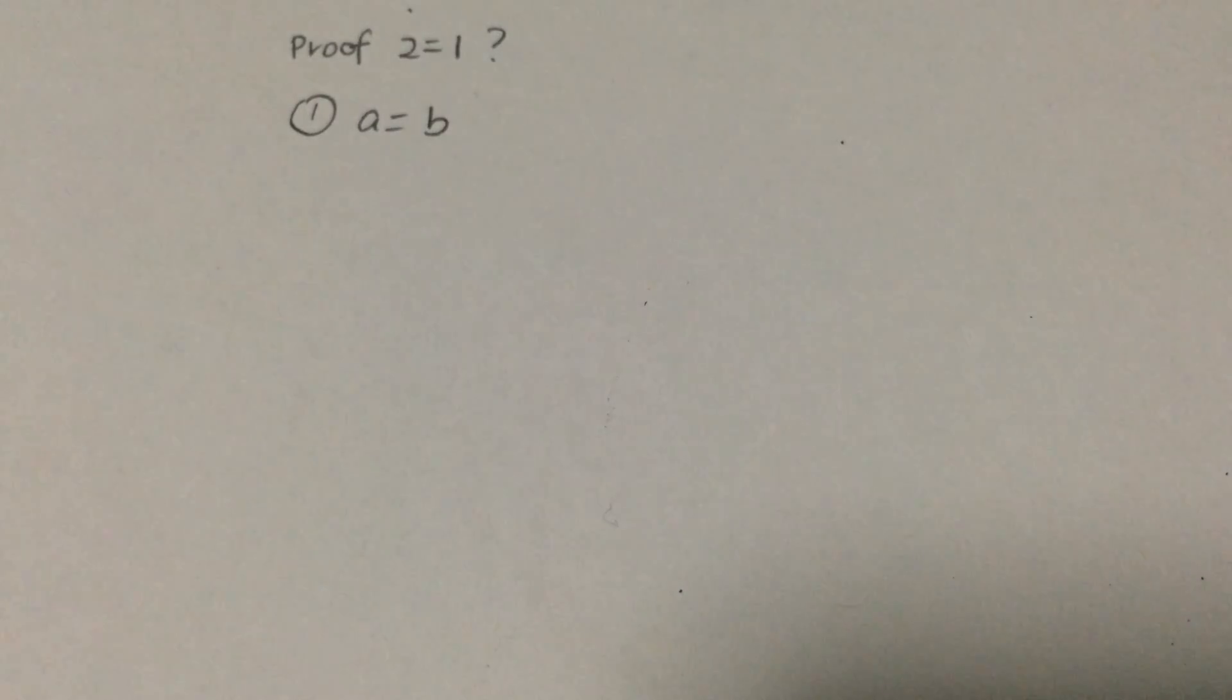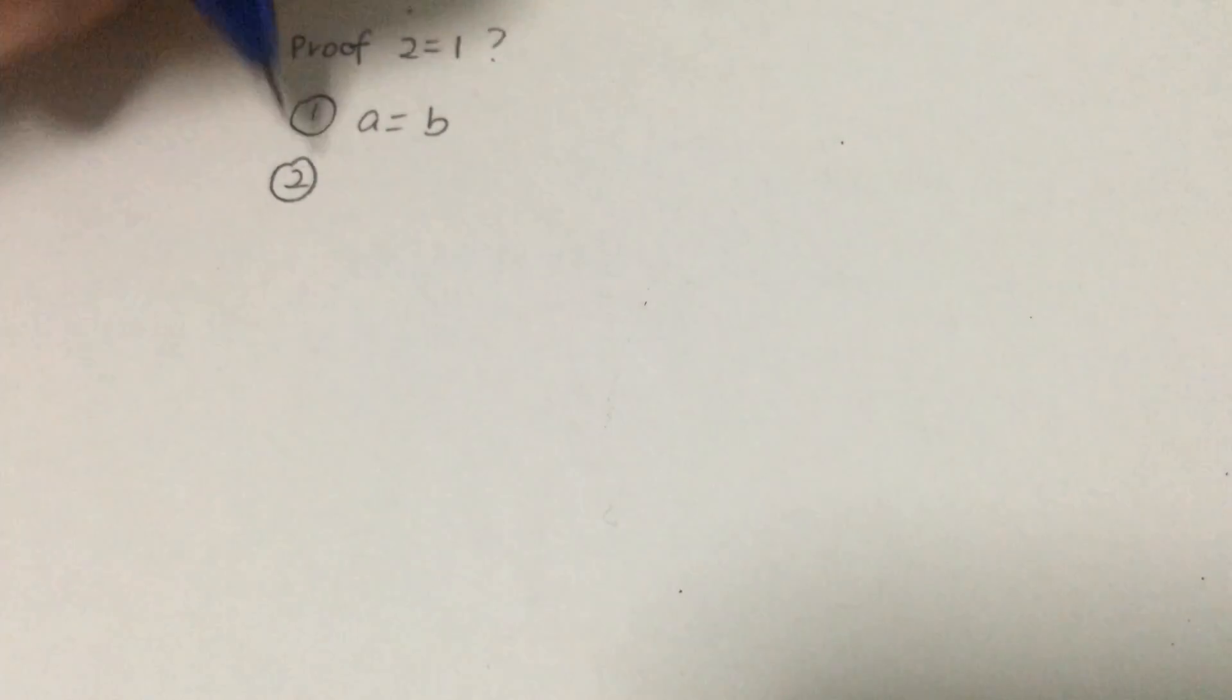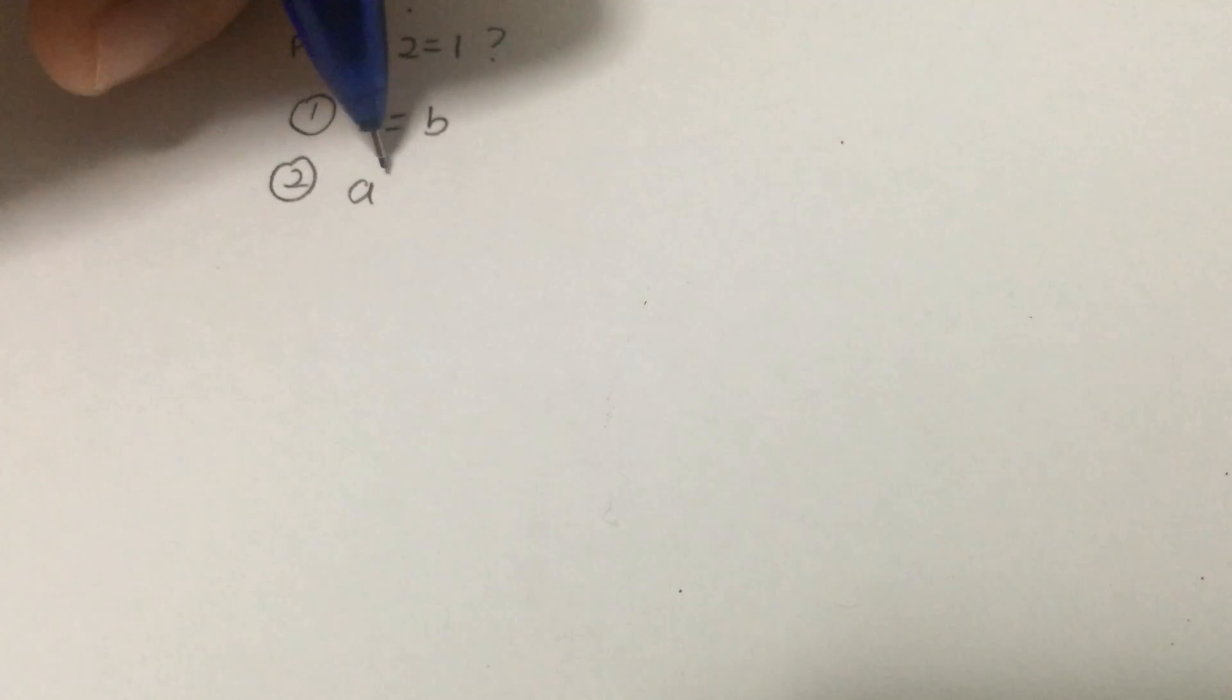We have the first step from here itself, which is a is equal to b. And after that, what I did was multiply a to both sides. So I will get a square equals to ab.